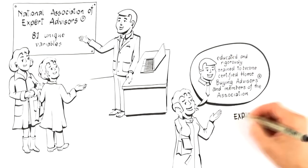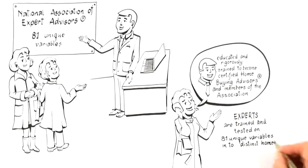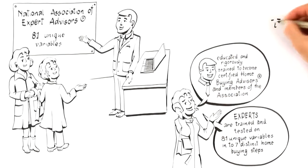that categorizes the 81 unique variables into 7 distinct home buying steps to give you an unfair competitive advantage in today's new real estate economy.